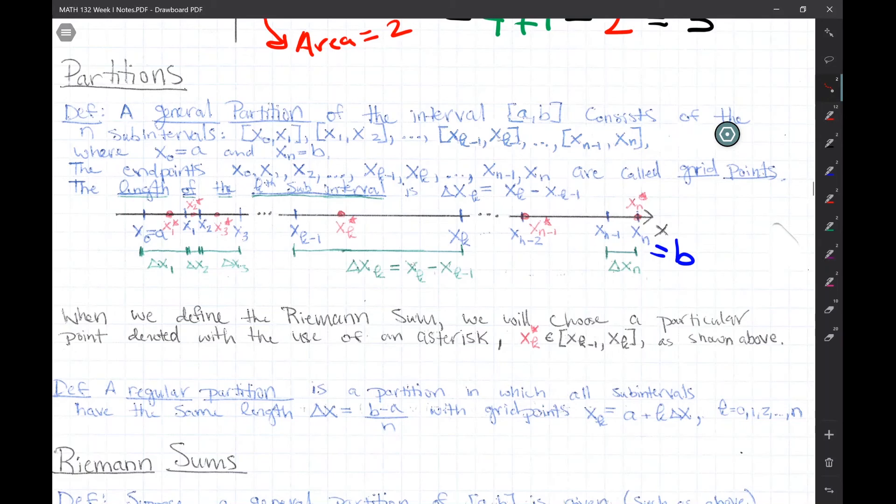That'll give you n distinct sub-intervals. And the grid points are given then by this formula there, for k between 0 and n, and that'll give you the entire grid points there, as k runs from 0 to n.